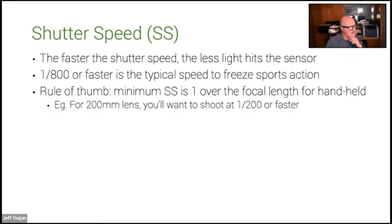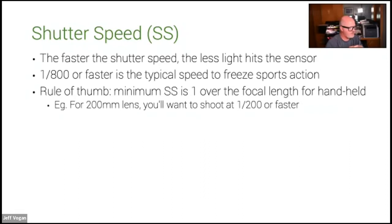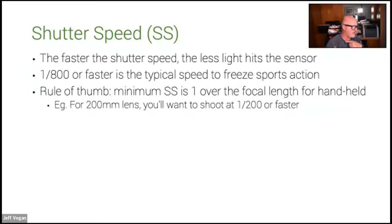Even just pushing the shutter release can cause some camera shake. Last night I was shooting the cityscape and the full moon at 1100mm, and just pushing the shutter release caused so much shake that the moon looked like it was wobbling.